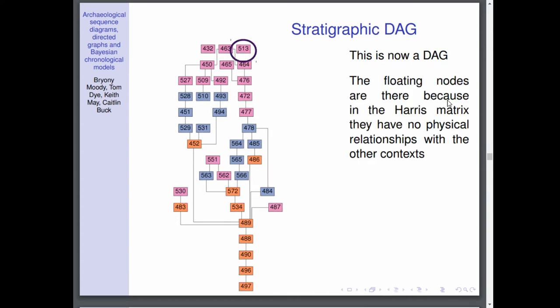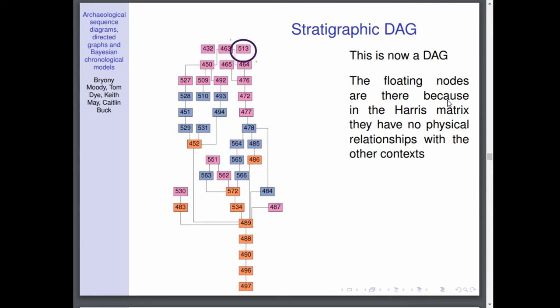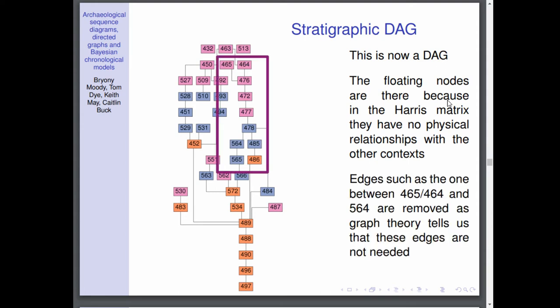So now this is what I call a stratigraphic DAG. This is purely the physical relationships between the contexts. But we have a few issues here. You notice we've got the floating node 5113. The reason for this is that in the Harris matrix, it had no physical relationships with any of the other contexts other than that it was a once whole context with 5512. But it actually had no physical relationships with any of the other contexts. As adding a once whole relationship creates a cycle, we've excluded that.